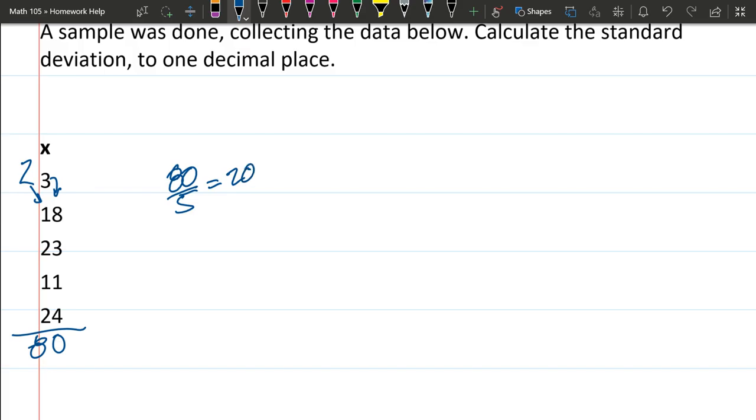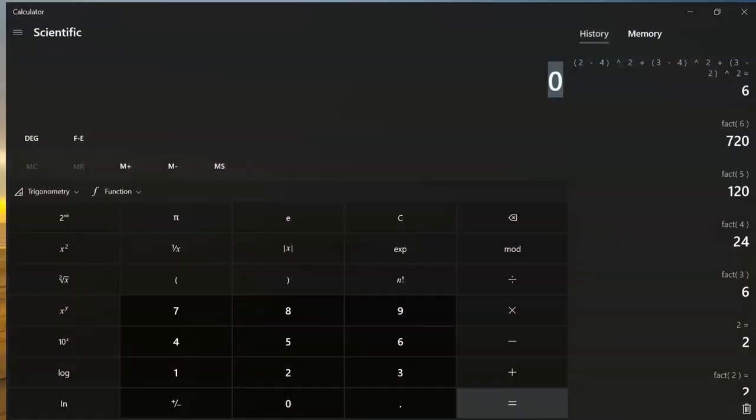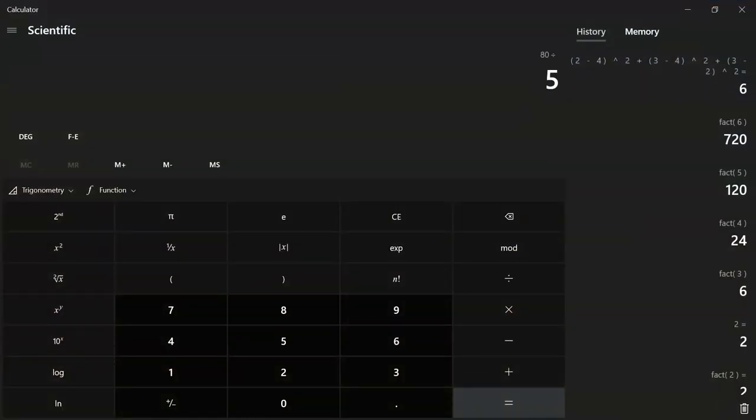When in doubt, you can always go to your calculator. 80 over five, 16. That was pretty close.